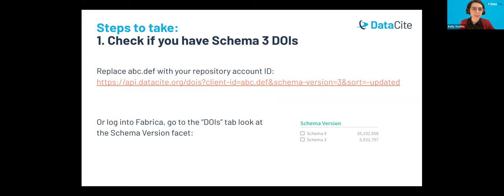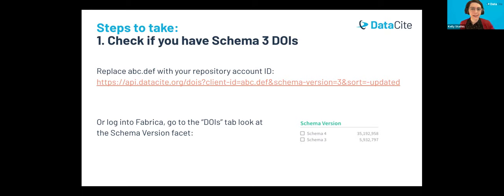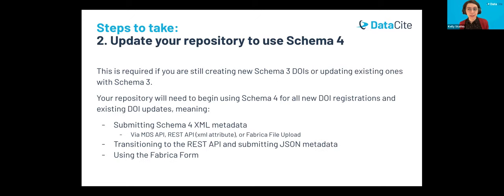The first thing to do is check if you have schema 3 DOIs. There's an API request in this slide which you can modify by replacing the placeholder with your own repository account ID — where it says abc.def, put in your own repository account ID. You can also log into Fabrica, go to the DOIs tab, and scroll down to look at the schema version facet on the left. When you do this check, you'll also want to see when those DOIs were last updated. The sort equals minus updated parameter sorts from most recently updated to least recently updated, so the ones at the top will be most recent. If you don't have any schema 3 DOIs, you're all set and don't need to make any changes. But if you do have schema 3 DOIs updated recently, you'll need to ensure your workflows are updated to use schema 4.